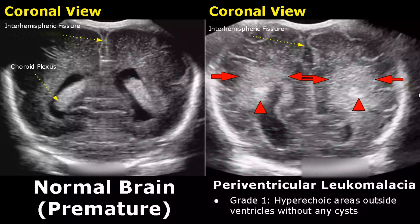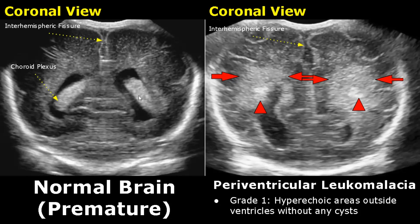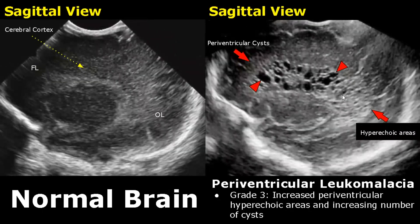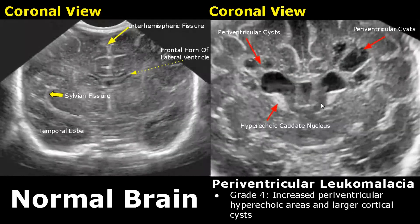This is a coronal image of a normal brain of a premature infant showing the choroid plexus. Periventricular leukomalacia affects the white matter of the brain and is graded by severity. In grade one, hyperechoic areas are seen outside the ventricles with no cystic areas. In grade two, multiple small cysts outside the ventricles are seen in addition to hyperechoic areas. In grade three, the number of cysts increases and the hyperechoic areas take up a larger area. In grade four, there are large cysts with greatly increased size.